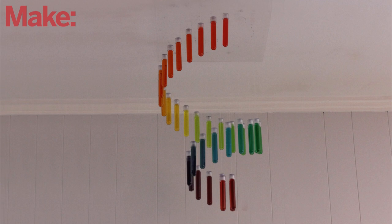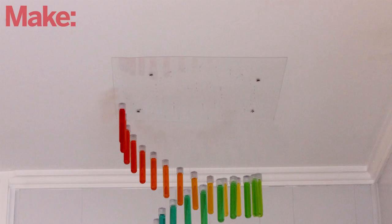The last step is to attach the plastic sheet to the ceiling. You can do this with ordinary wood screws.